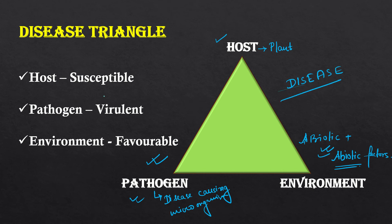Certain criteria need to be fulfilled for disease to occur in the host. First, let's start with the host. The host will have to be susceptible. If the host has got a very strong immunity, it's difficult for a pathogen to cause disease in that particular host. If the host is susceptible, it will fall prey to the pathogen and contract the disease faster.